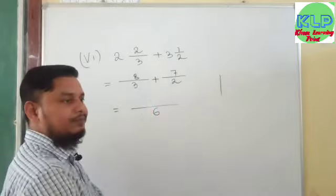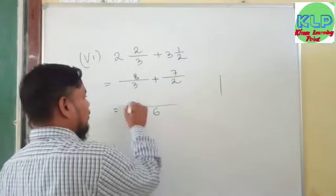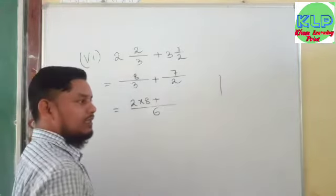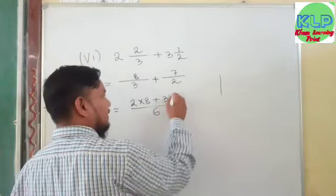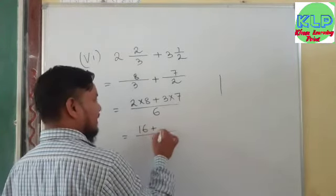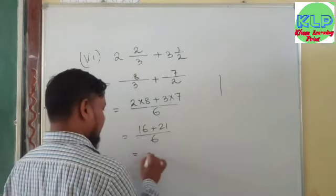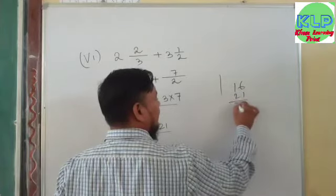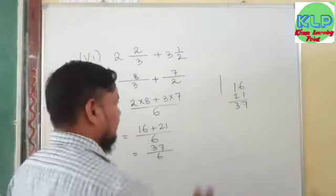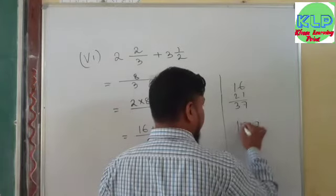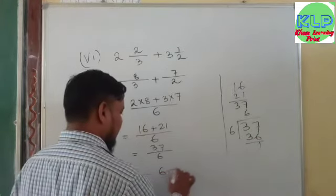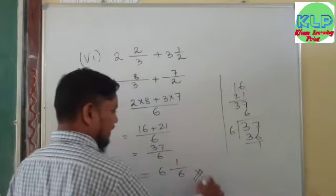Now, divide 6 by 3 equals 2; multiply 2 into 8 equals 16. Plus, divide 6 by 2 equals 3; multiply 3 into 7 equals 21. So we have 16 plus 21 equals 37 upon 6. This is an improper fraction. To convert to mixed fraction: 37 divided by 6 — 6 sixes are 36, remainder is 1. So the whole number is 6, denominator is 6, remainder is 1. The answer is 6 and 1 upon 6.